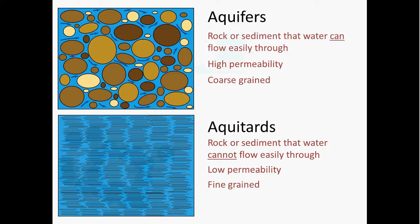So while shale might contain a fair amount of pore space, those pores tend to be very small and not very well connected because of those small grains. And this limited connectivity means that the water cannot flow through them easily. They have a relatively low permeability.